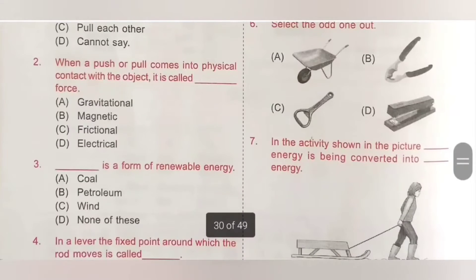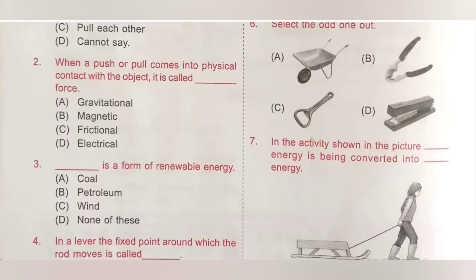Question 2: When a push or pull comes into physical contact with the object, it is called dash force. Option A: Gravitational, B: Magnetic, C: Frictional, D: Electrical. When a push or pull comes into physical contact with the object, it is called electrical force. Option D is the correct answer.